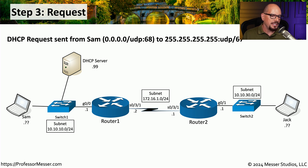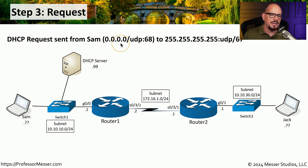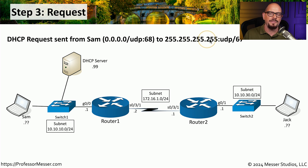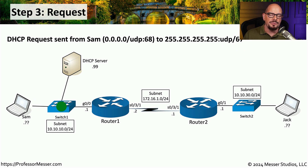In step three, Sam's device is going to choose one of those offers and send a DHCP request to that particular DHCP server. This request comes from 0.0.0.0 because Sam's workstation still does not have an IP address. It is sourced from UDP port 68, and the destination is 255.255.255.255 — another all-ones broadcast — sent to destination port UDP port 67. This traffic flow is very similar to the first Discover flow, where all packets are broadcast to all devices on the local subnet.